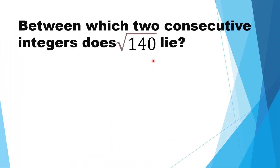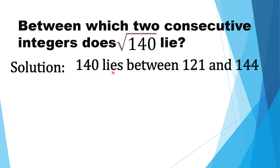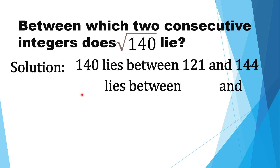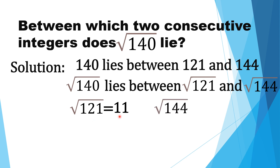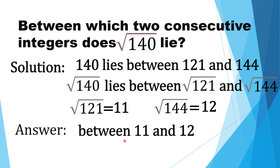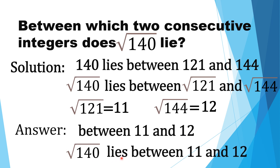Between which two consecutive integers does the square root of 140 lie? 140 lies between 121 and 144. Square root of 140 lies between square root of 121 and square root of 144. Square root of 121 is equal to 11, and square root of 144 is equal to 12. Thus, square root of 140 lies between 11 and 12. Remember, 11 and 12 are two consecutive integers.